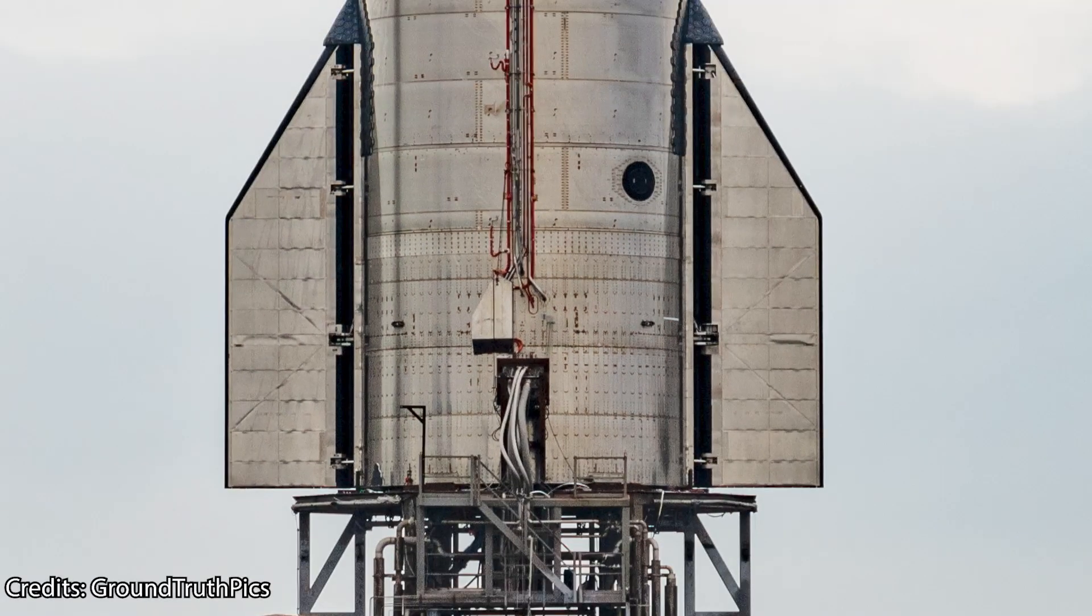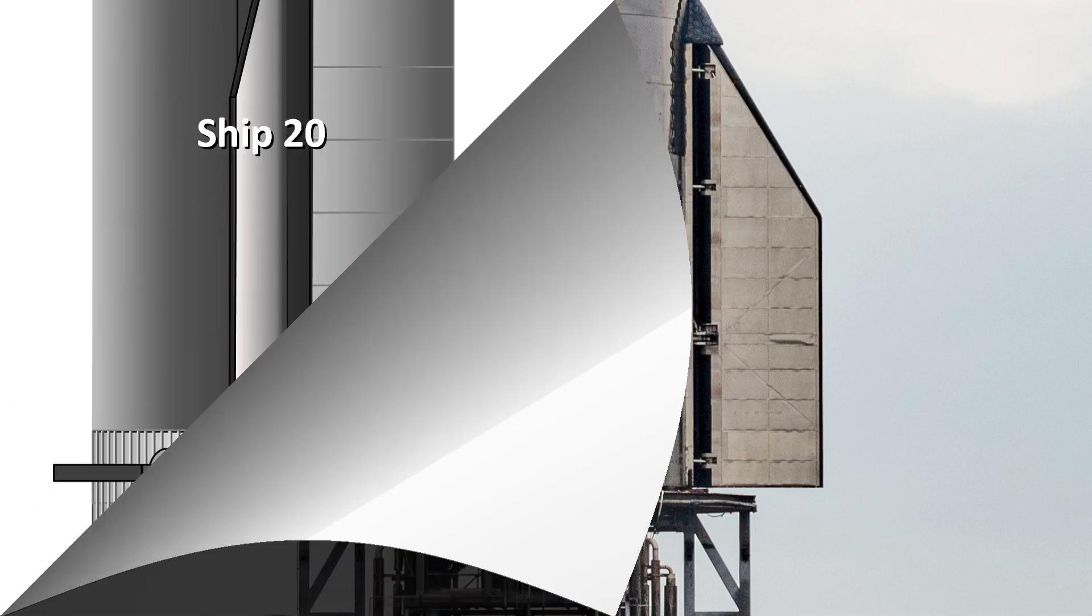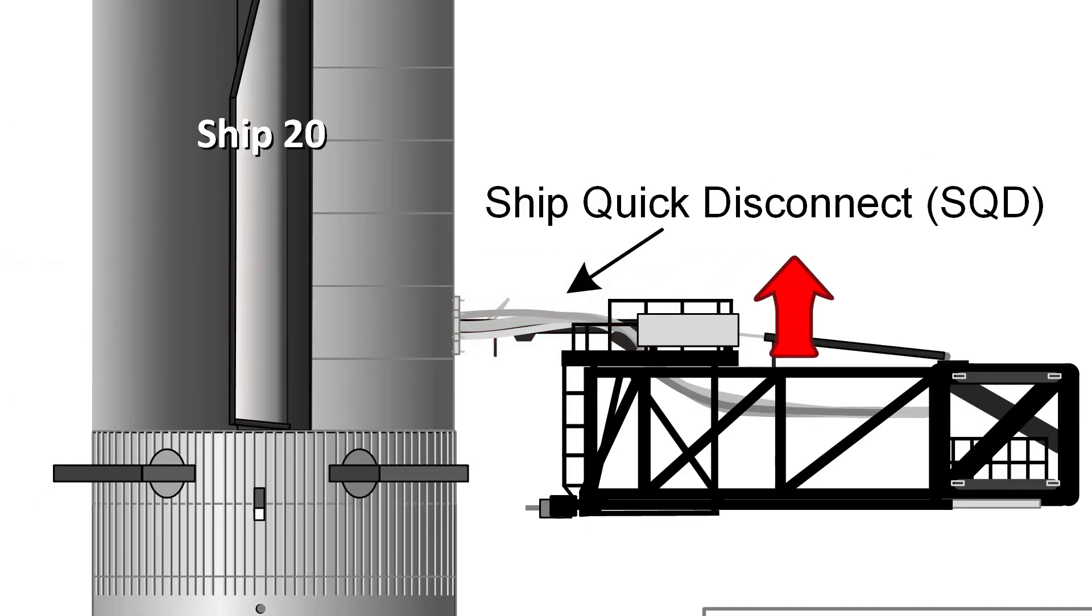This panel is currently located around two and a half meters above the bottom of the skirt, but on future designs it will be placed a little bit higher. To overcome this discrepancy in height, it is assumed that the ship quick disconnect will simply be placed higher, although this remains purely speculative.